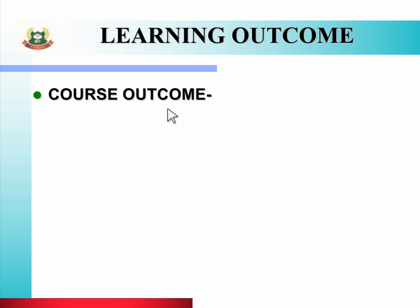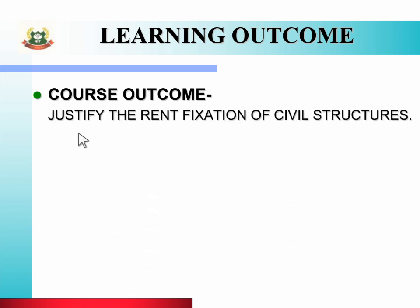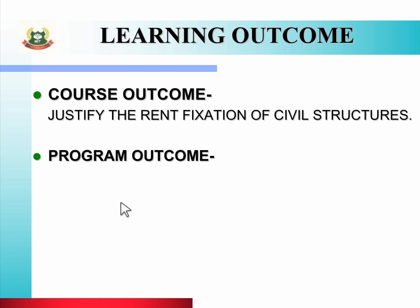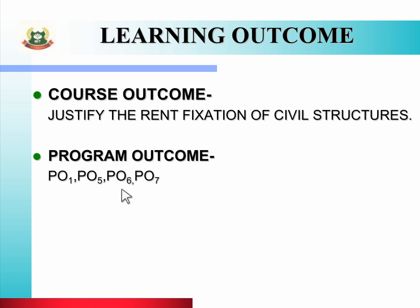The course outcome of this unit is: justify the rent fixation of civil structures. After studying this unit, you will be able to calculate rent fixation for civil structures. The related program outcomes are PO1, PO5, PO6, and PO7 — that is, basic and discipline-specific knowledge, engineering practices for society, sustainability and environment, project management, and lifelong learning.